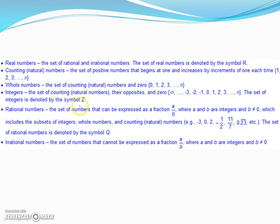The next group we refer to is rational numbers. Rational numbers are the set of numbers that can be expressed as a fraction a over b, where a and b are integers and b cannot be zero, which includes the subset of integers, whole numbers, and counting numbers. Here's a few good examples of rational numbers. Here's the one we saw earlier in the integers. That could be made into a fraction by putting it over 1.